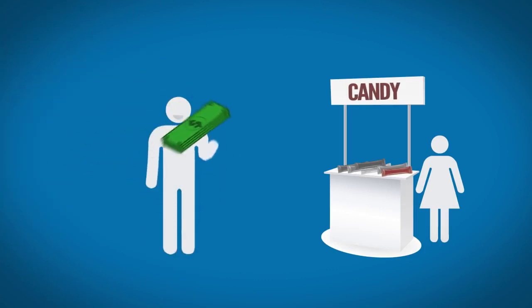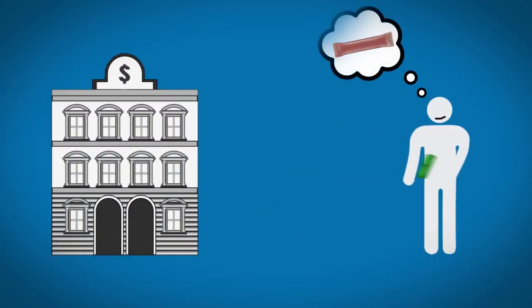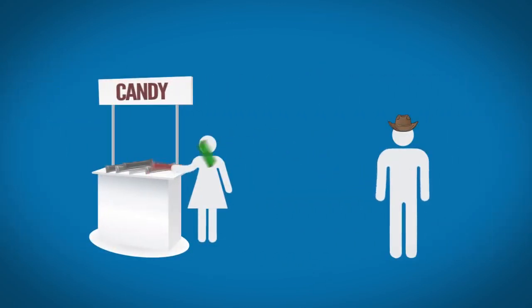That money represents something: the ability to consume goods and services. When you have a dollar, you have the ability to purchase a candy bar. When you don't, you don't. Here's what that means. When somebody saves money at a bank, they're choosing to forego their consumption and allow somebody else to consume in their place.